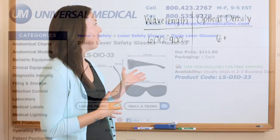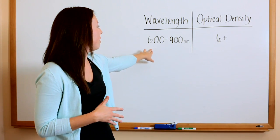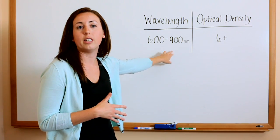For example, we have on our whiteboard the diode laser safety glasses. For this specific pair of glasses, the wavelength range it protects against is 600 to 900 nanometers.